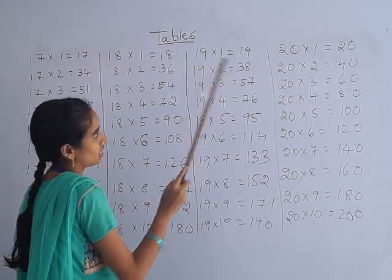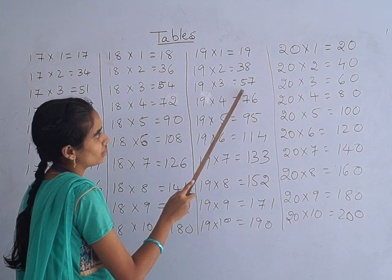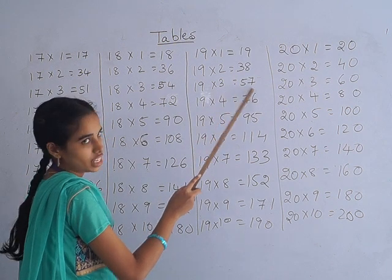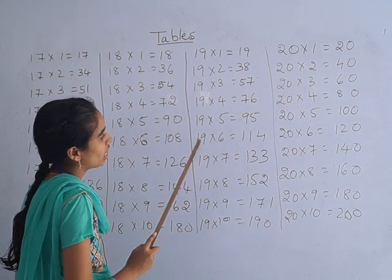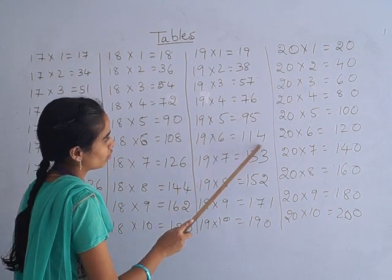19 ones are 19, 19 twos are 38, 19 threes are 54, sorry 57, 19 fours are 76, 19 fives are 95.